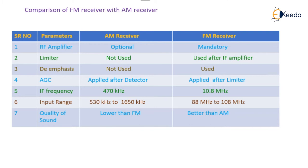Both AM and FM receivers operate on the principle of superheterodyne. Regarding the limiter, in AM receiver no limiter is used, but in FM receiver we use the limiter after the IF amplifier.